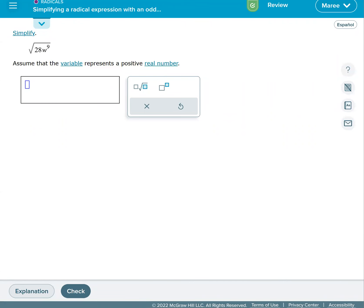So now we're going to just straight up simplify a radical expression with an odd exponent. So we can rewrite the square root of 28w to the ninth.